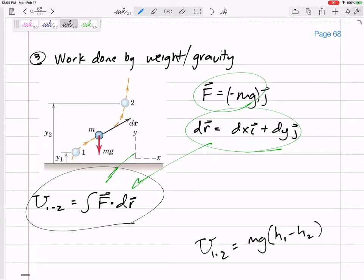y₁ minus y₂, the height of the mass initially minus the height of the mass final - the height of the mass at position one minus the height of the mass at position two.